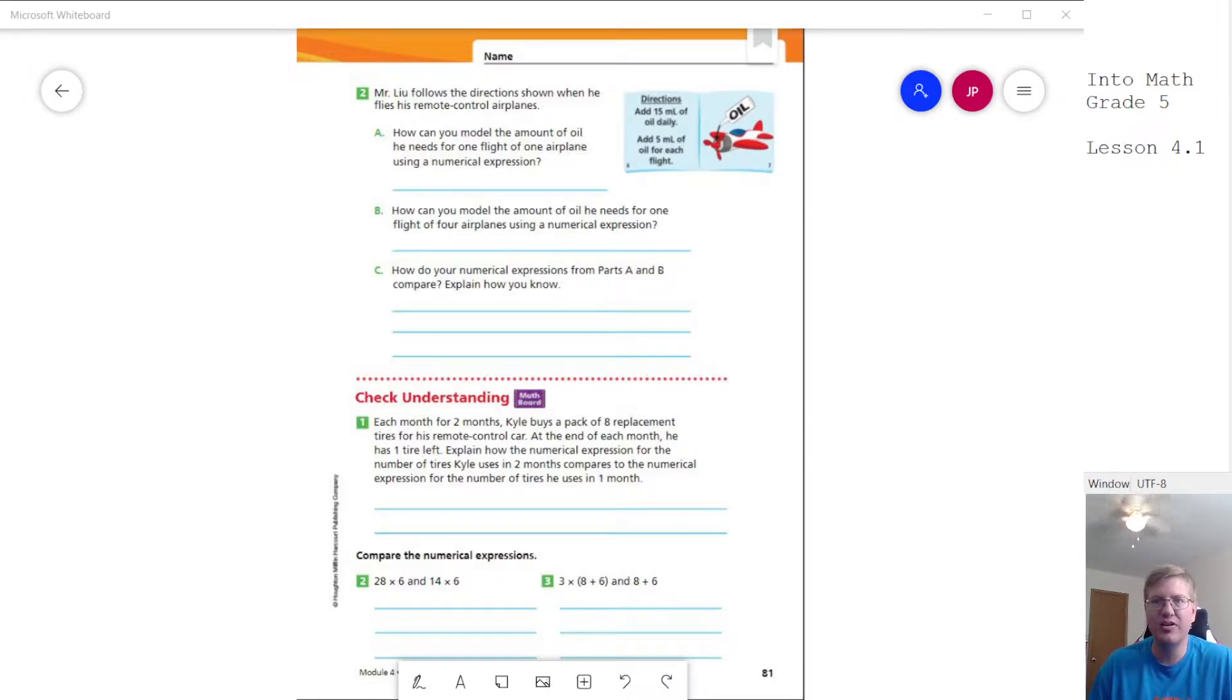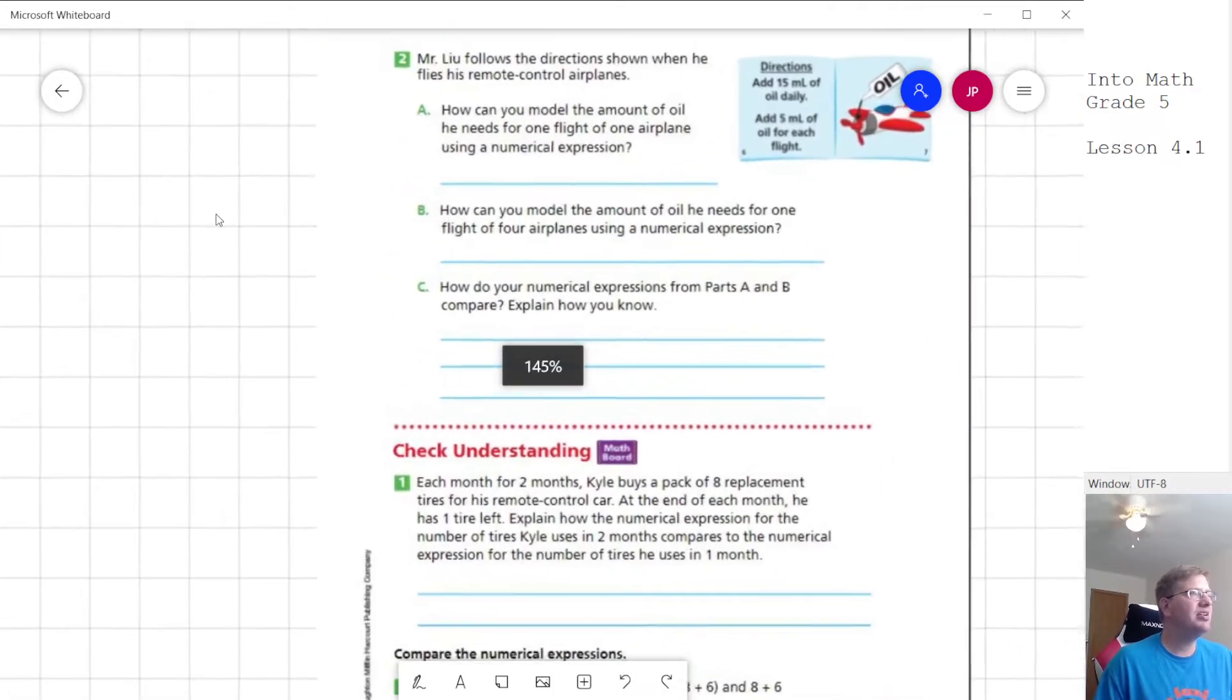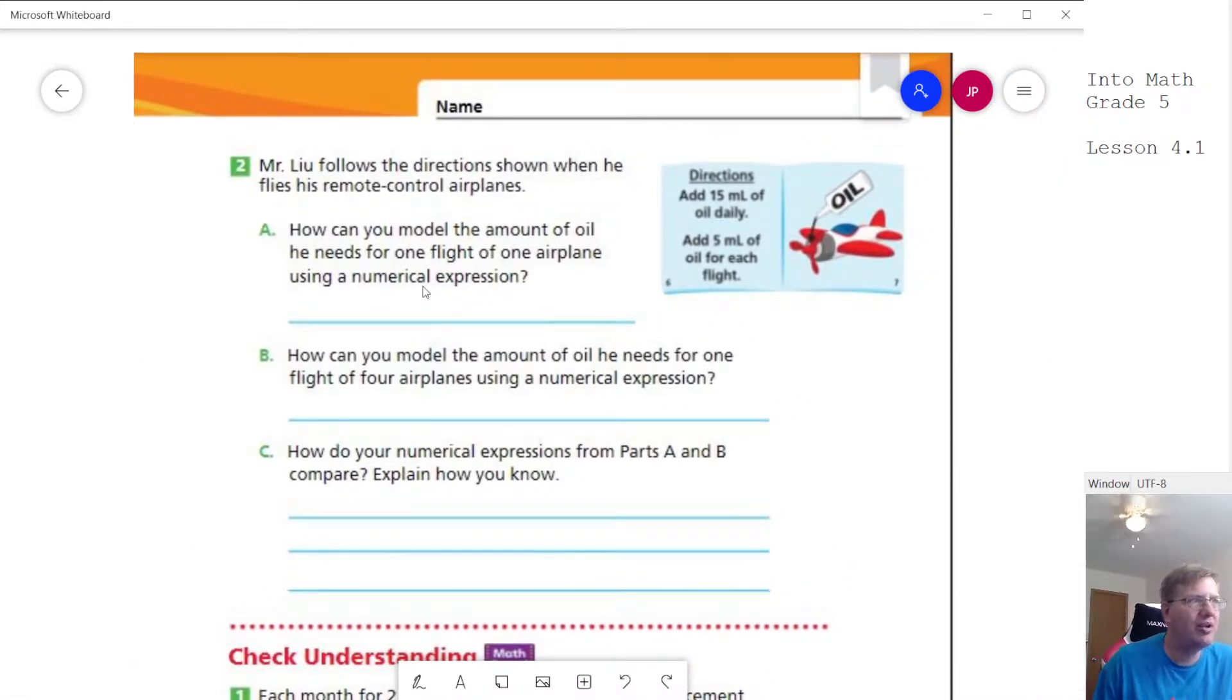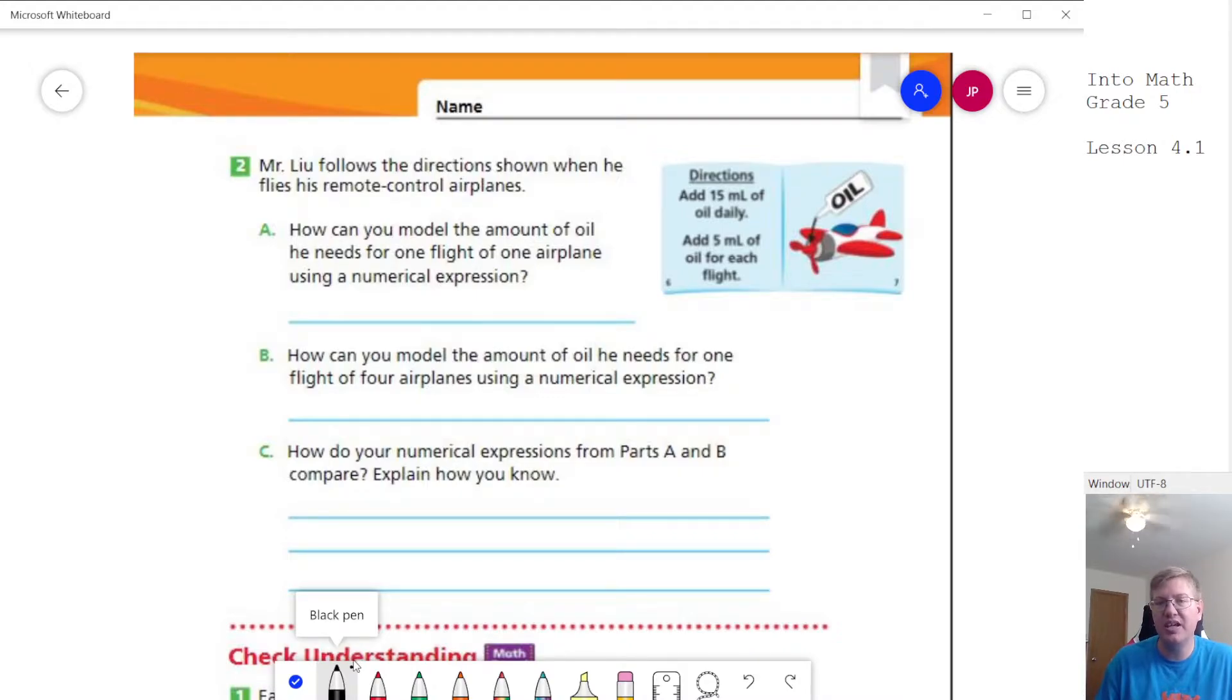For our first problem, we are going to try to figure out how we can model how much oil we need for one flight of an airplane. It tells us we need to add 15 milliliters of oil each day and 5 milliliters of oil for each flight. So depending on how many flights we take, our final answer is going to change for how much oil we need.